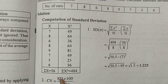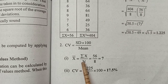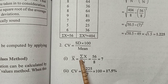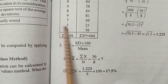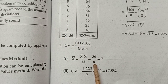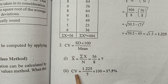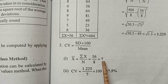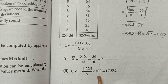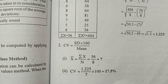Now we calculate the coefficient of variance, which equals standard deviation divided by mean, multiplied by 100. The mean x-bar equals 56 divided by 8, which is 7. Therefore, coefficient of variance equals 17.5 percent.